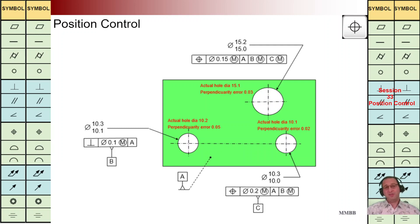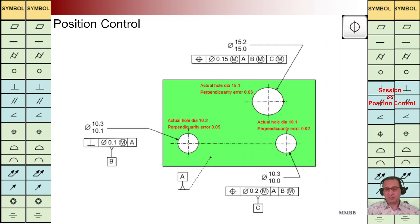Hello everybody, good to see you today. We're going to talk about position control. We have this part with two small holes and one large hole at the top. We have datum plane A, datum axis B, datum axis C. We have used these two feature control frames with positioning control at the bottom and also at the top. We would like to see what is the meaning of this modifier for datum features here and also here.